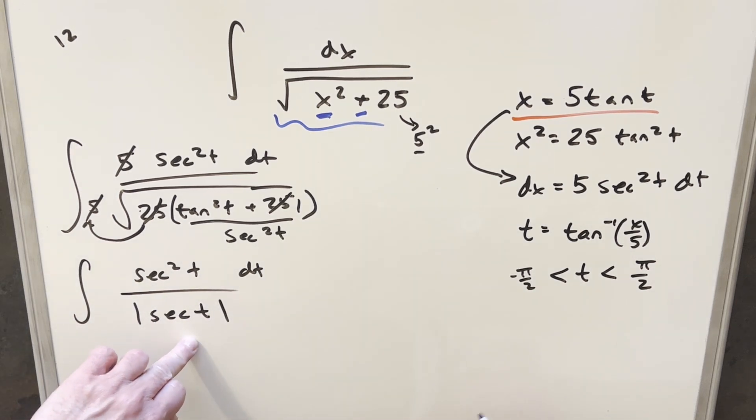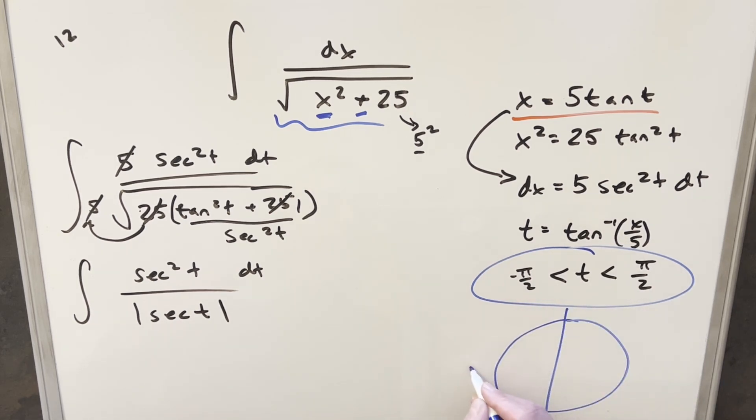And now the absolute value is why I made a note of the domain right here. Because from t, we're going from minus pi over 2 to pi over 2. If we look at our unit circle, that's just going to be quadrants 1 and 4, right? Because this is like our minus pi over 2, and this is pi over 2.